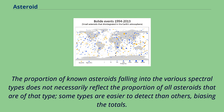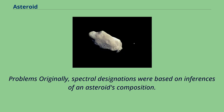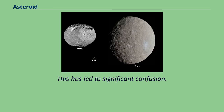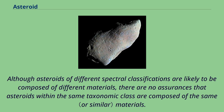The proportion of known asteroids falling into the various spectral types does not necessarily reflect the proportion of all asteroids that are of that type, as some types are easier to detect than others, biasing the totals. Originally, spectral designations were based on inferences of an asteroid's composition. However, the correspondence between spectral class and composition is not always very good, and a variety of classifications are in use. Although asteroids of different spectral classifications are likely to be composed of different materials, there are no assurances that asteroids within the same taxonomic class are composed of the same materials.